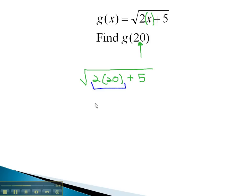Simplifying, we'll multiply first, giving us the square root of 40 plus 5, and then we will add the 40 and 5 together to get the square root of 45.